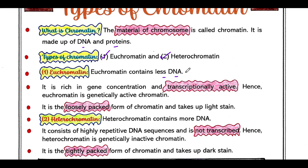Hence euchromatin is genetically active chromatin. It is a very loosely packed form of chromatin. Since euchromatin contains many structural genes that need to be transcribed, the DNA part should be loosely packed, otherwise the different proteins which help in the transcription process will not be able to access the DNA, and transcription cannot proceed.